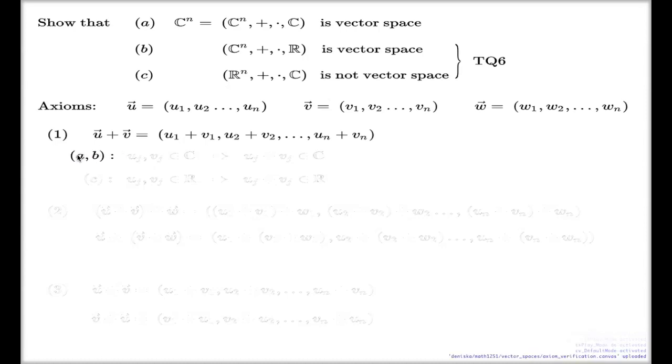For the case A and B, you should argue like this. Because the entries of the original n-tuples are complex numbers, we know that when we add complex numbers, we end up with complex numbers. That's the main piece which you have to say in your argument.